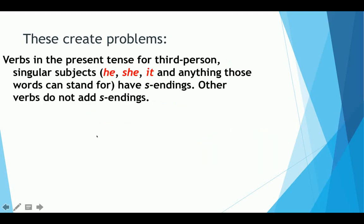Verbs in the present tense for third person singular subjects, he, she, and it, and anything those words can stand for, have S-endings. Other verbs do not add S-endings. And remember, this is singular.